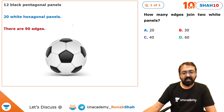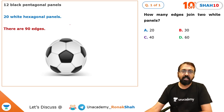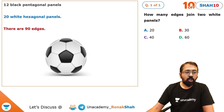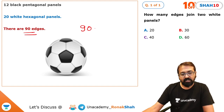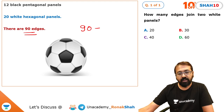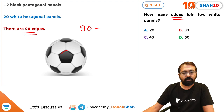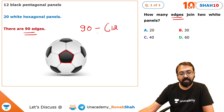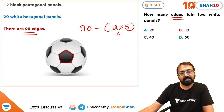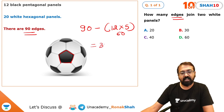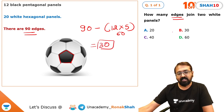There are two ways to think about this problem. There are 90 total edges and we need to find how many join two white panels. First approach: there are 12 pentagonal panels and each pentagon has 5 edges, giving 60 black edges. Subtracting from 90 gives 90 minus 60 equals 30.